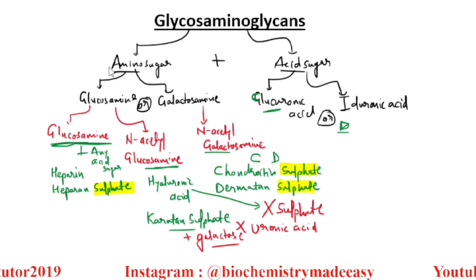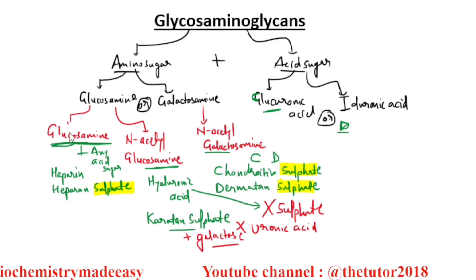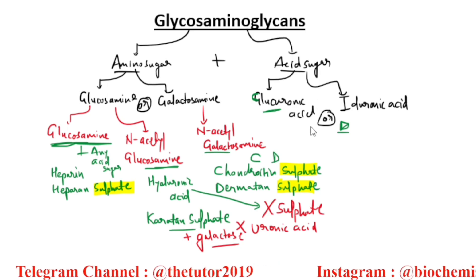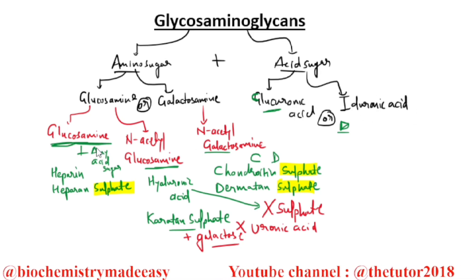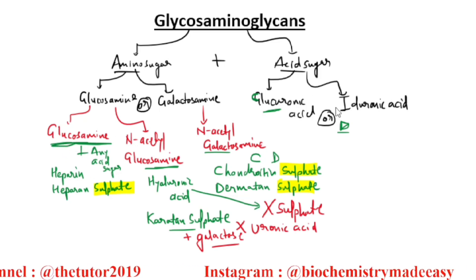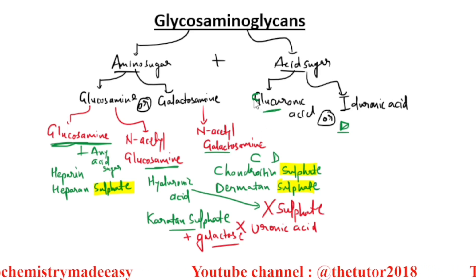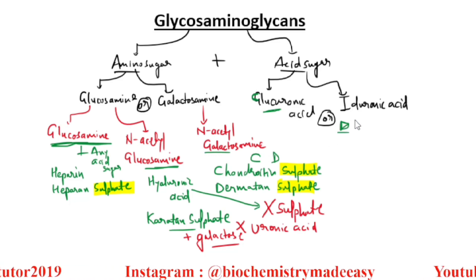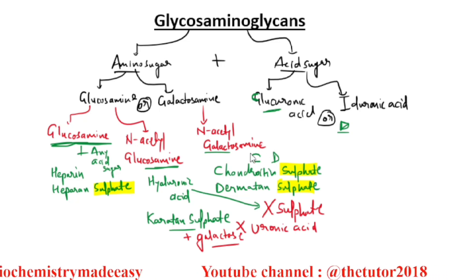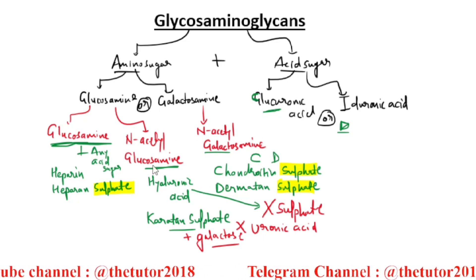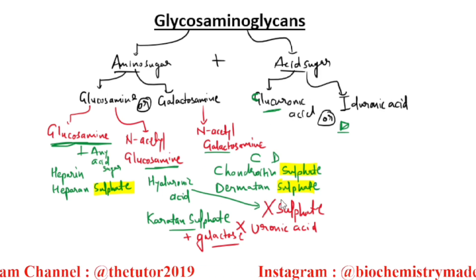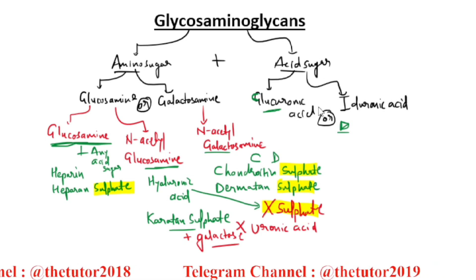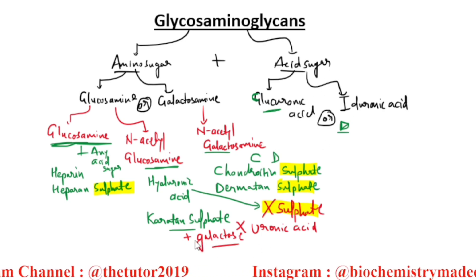Quick revision: the repeating disaccharide has an amino sugar and an acid sugar. Amino sugars are glucosamine, N-acetyl glucosamine, and N-acetyl galactosamine. Acid sugars are glucuronic acid and iduronic acid. Heparin and heparan sulfate use glucosamine with either acid sugar. N-acetyl galactosamine with glucuronic acid gives chondroitin sulfate (C); with iduronic acid gives dermatan sulfate (D). N-acetyl glucosamine with glucuronic acid is hyaluronic acid — no sulfate. Keratan sulfate uses N-acetyl glucosamine with galactose, no uronic acid.